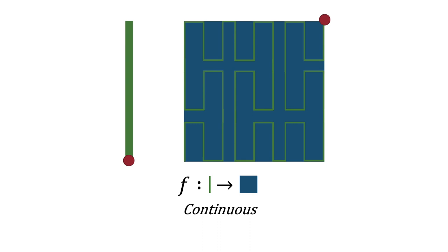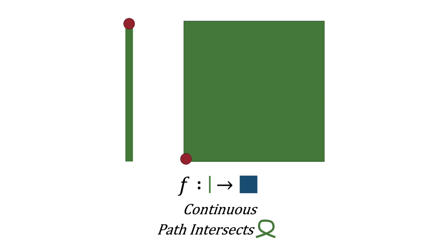However, just like Cantor's pairing, Peano's curve also has a pretty big limitation. As we take the path to its limit, the path starts to intersect. It was as if Peano had to glue parts of the line together in order to cover the entire square. So there still seems to be something fundamentally different in the shape of the line segment versus a square.